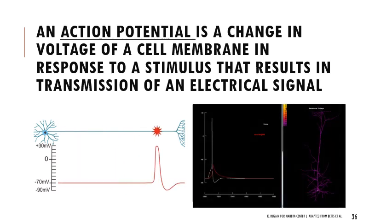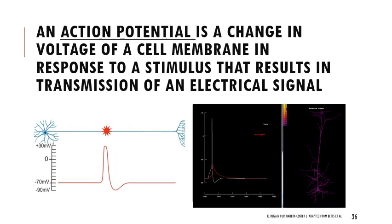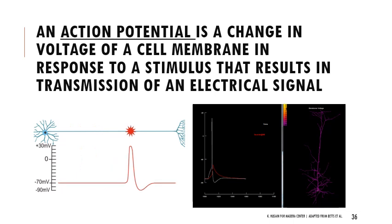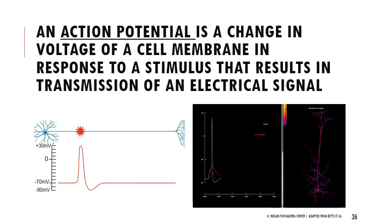Looking at this GIF tracking millivolts, you can see it shoot up to the top of the action potential - that signal is being sent out and the neuron is illuminating. It goes up from resting to the action potential peak, then dips down to hyperpolarization, really low, then levels back out to resting potential. Flash, then back to rest until another signal is sent.